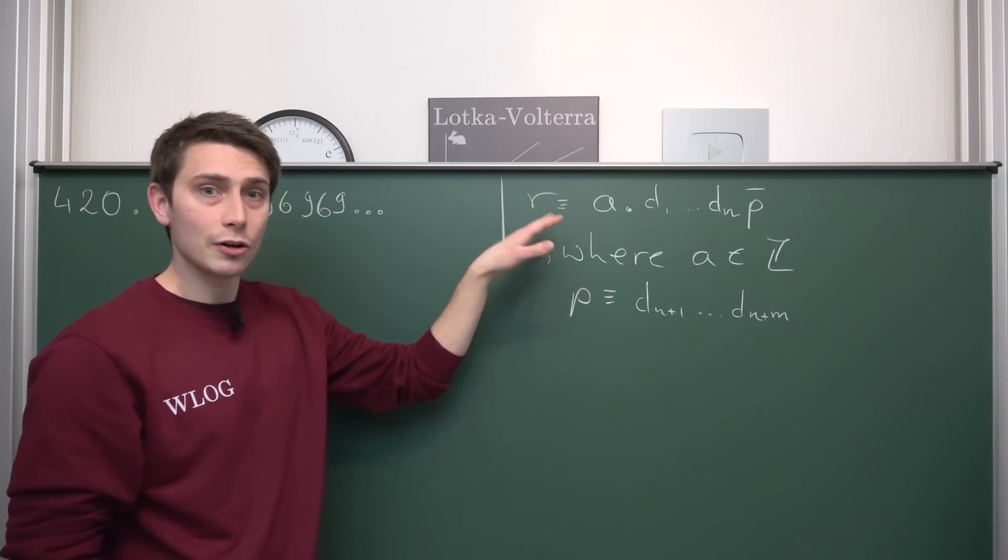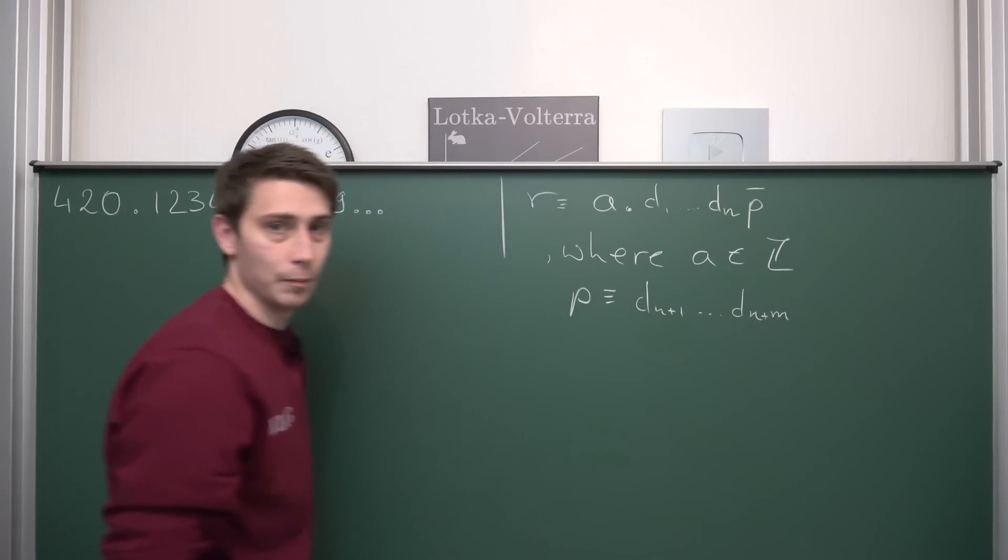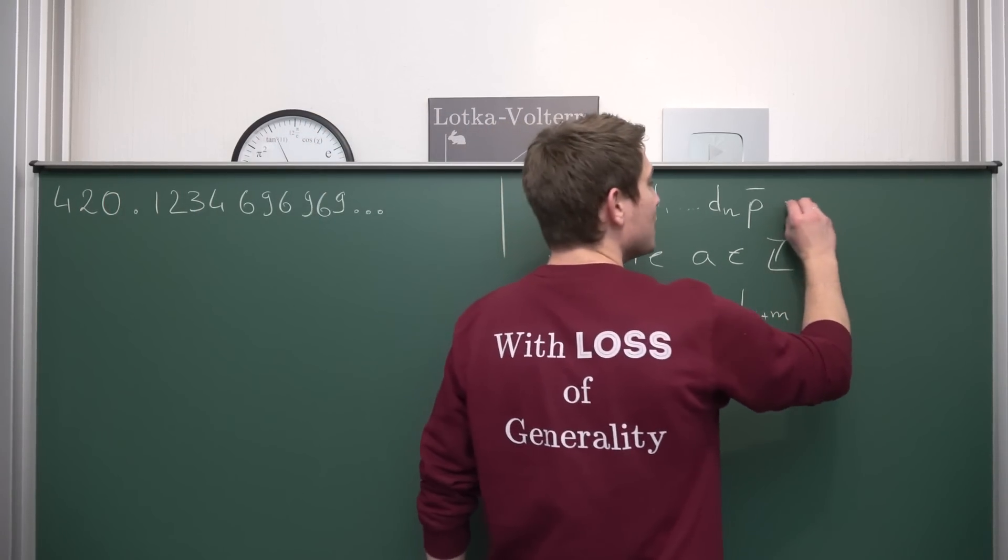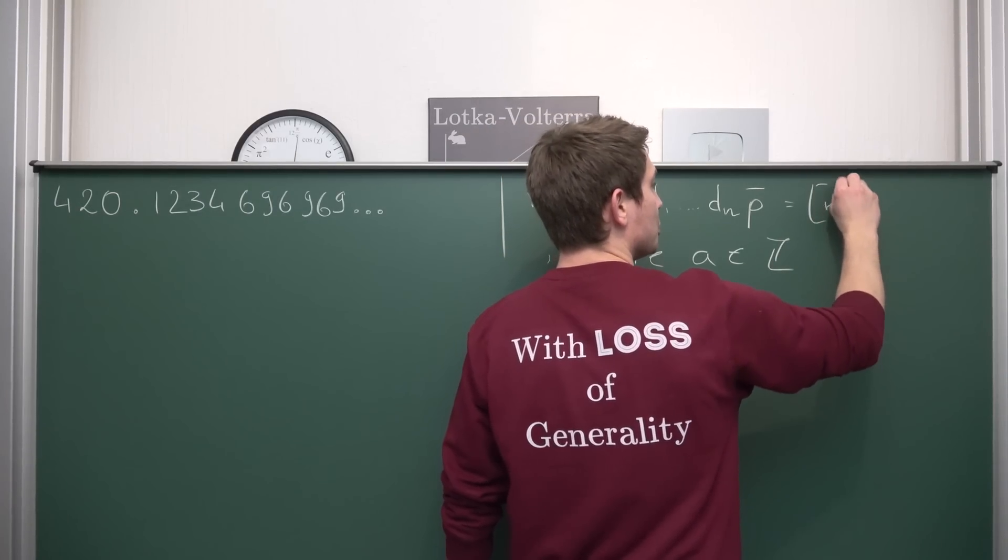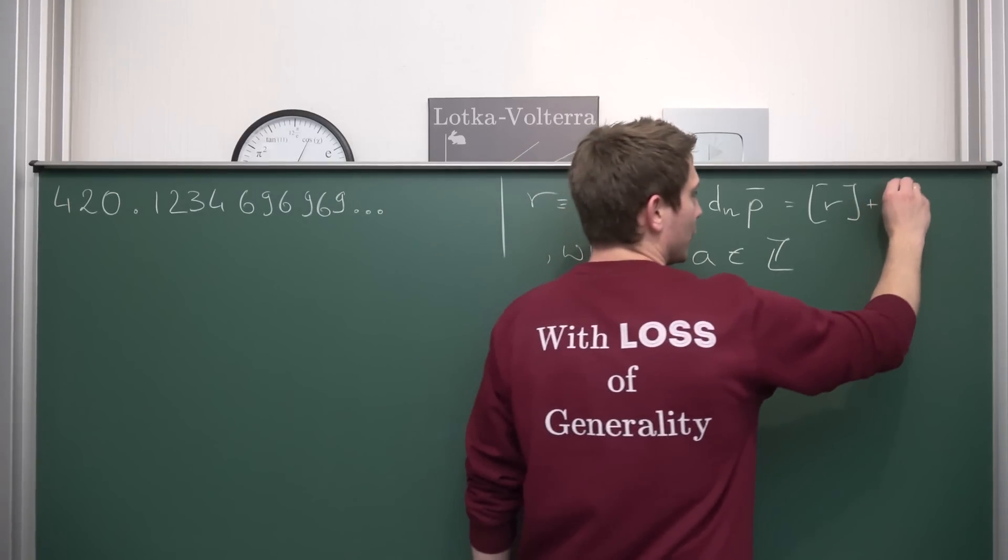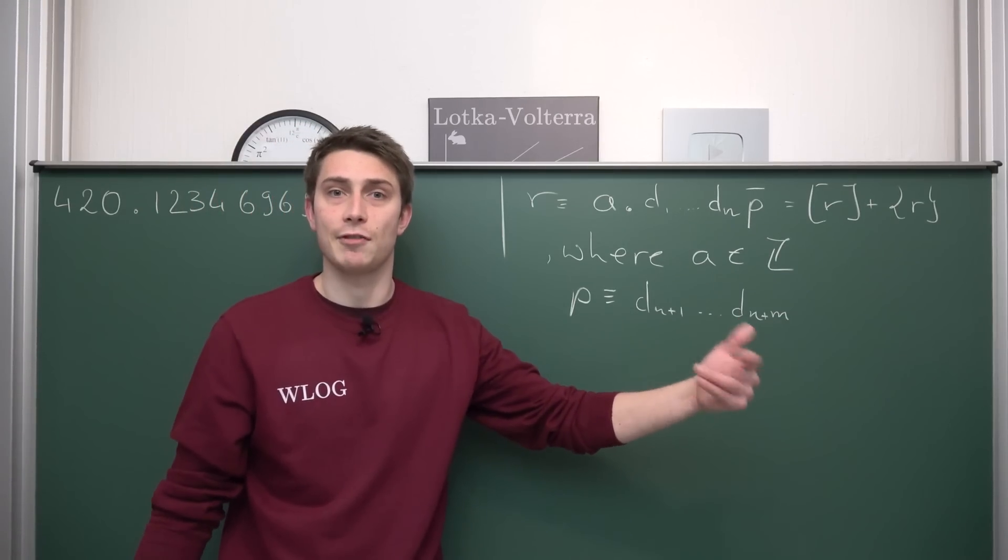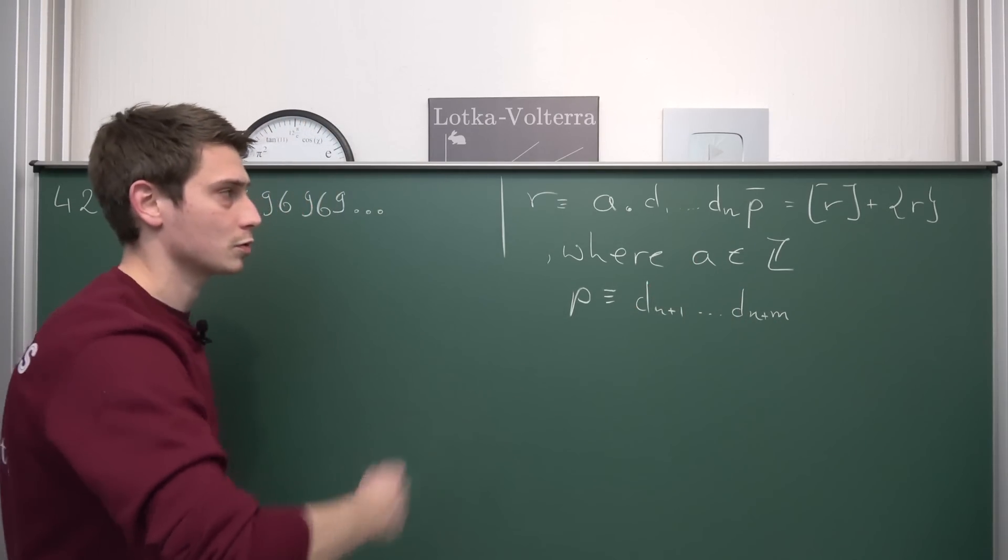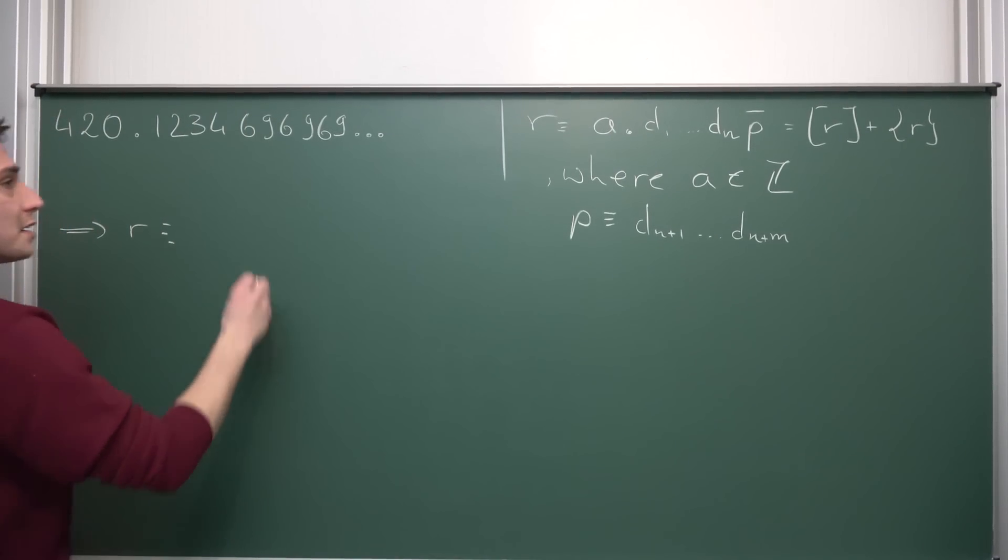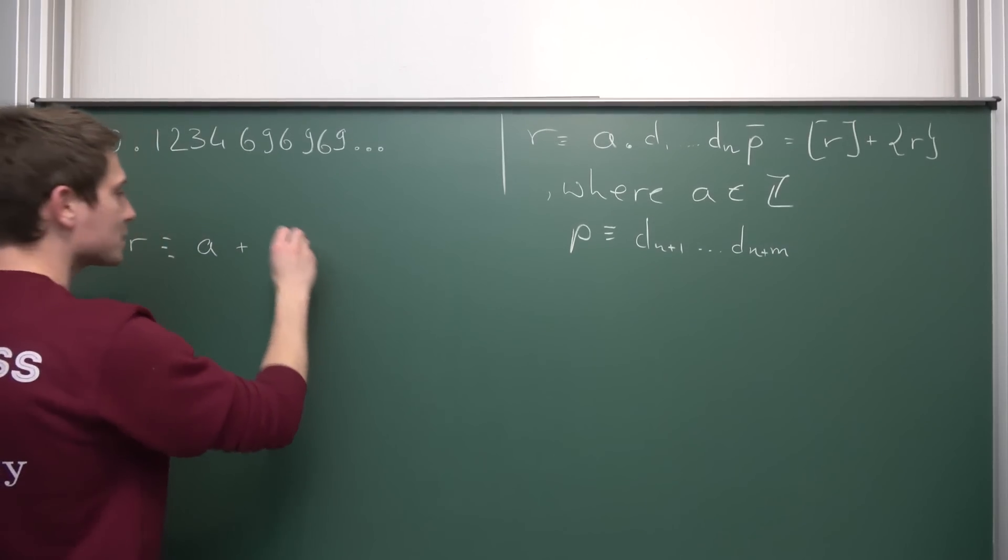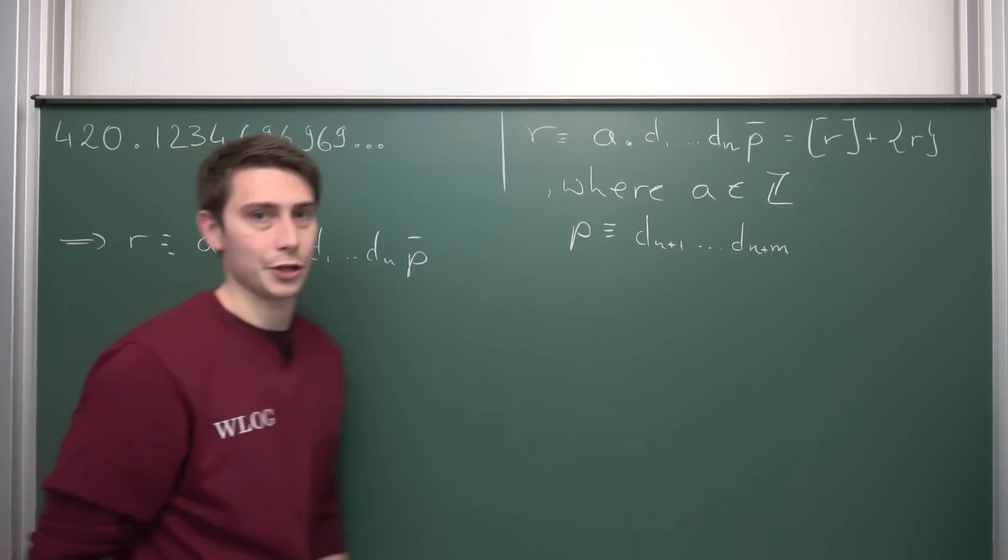And now we are going to manipulate this a little bit more. At first, I would like to rewrite R as the addition of two things. Namely, we have a certain integer part, which is A, and then we have a certain fractional part, because each and every decimal number can be expressed as the integer part in some way. So the integer part of R plus our fractional part of R. I mean, it does make sense. 1.5 is nothing but 1 plus 1 half, dot 5. So meaning our R in the process is hence nothing other than A as being the integer part plus O dot, and now we have D1 up until Dn times our periodic part.